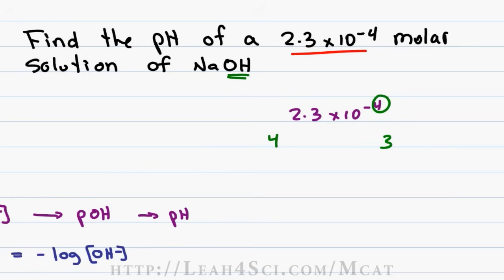Remember the trick when we use 3 times 10 to the minus 3 and it was 2.53? In this case, 2.3 is very close to 3 so the answer should be very close to 0.5 but we have to take the smaller number, it won't be 4.5, it will be something like 3.5 because we know our pOH range has to be between 3 and 4.